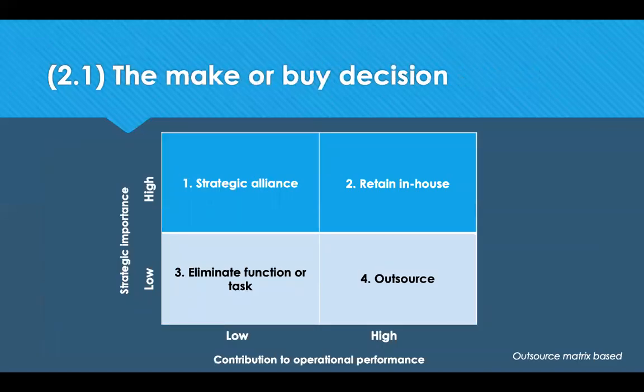A decision most organisations face when buying from an external supplier is the make or buy decision. This is a decision about whether to produce the goods or deliver a service internally, or source it from an external supplier. The matrix on the screen helps you make that decision by plotting strategic importance against operational importance, from high to low. Products in the bottom left quadrant — low risk to outsourcing — would be sourced from a supplier, while products in the top right quadrant — high risk of outsourcing — should be retained in house.